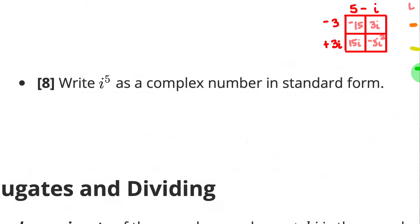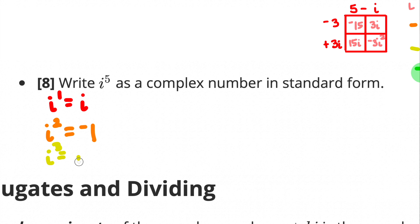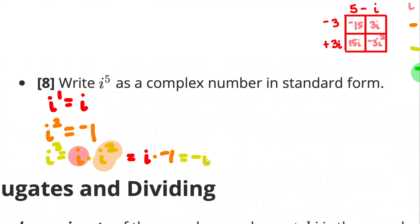Number 8 says write i to the 5th as a complex number in standard form. The easiest way is to notice a pattern. i¹ = i; i² = -1; i³ = i · i² = i · (-1) = -i; i⁴ = i² · i² = (-1)·(-1) = 1.